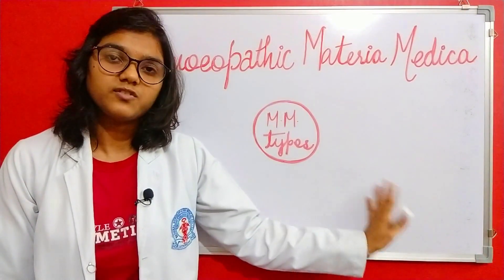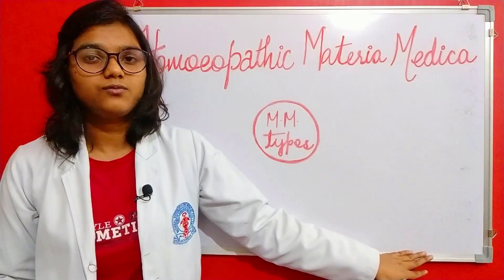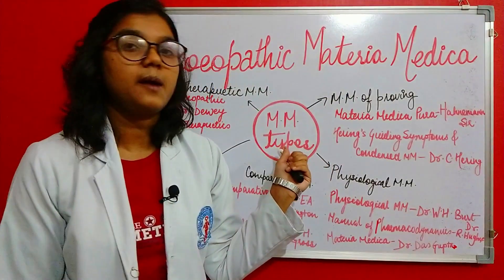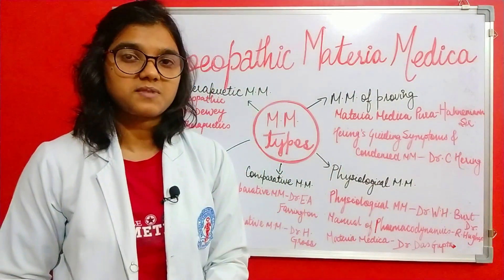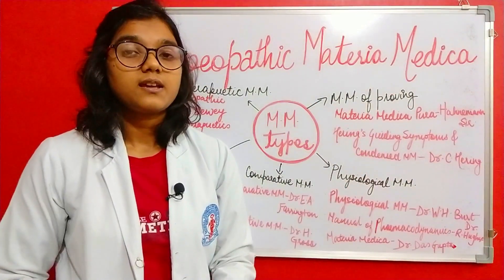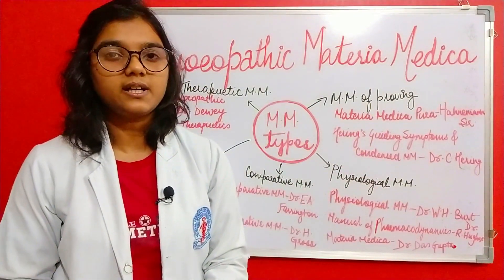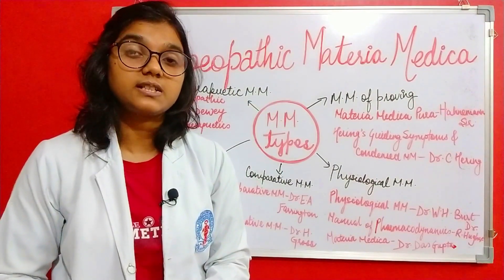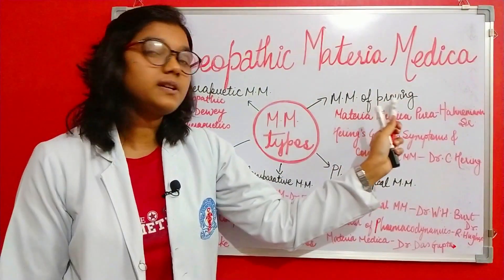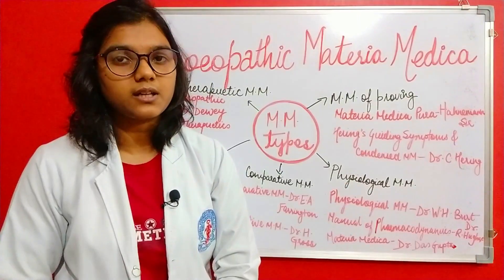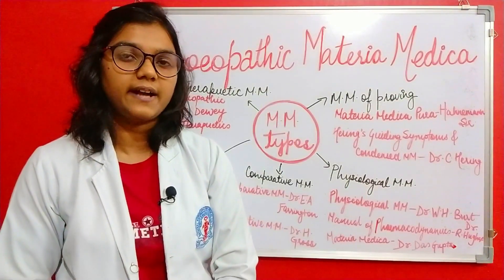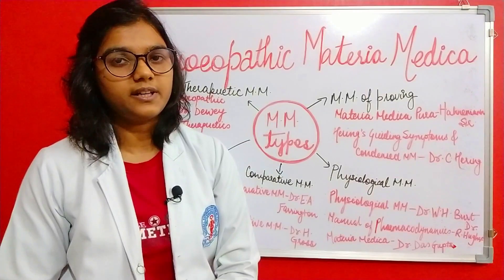Now let's see the types of materia medica that have evolved so far. The first type is materia medica of proving. Here we have books of materia medica where the drugs have been well proved, and after proving, the materia medica was framed.